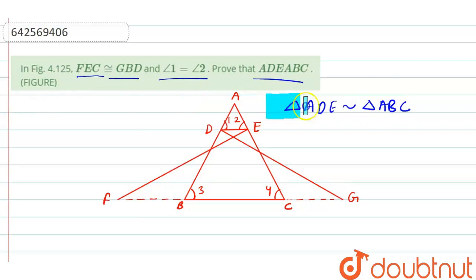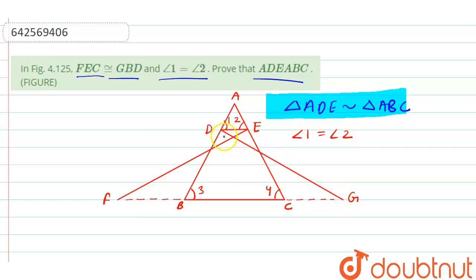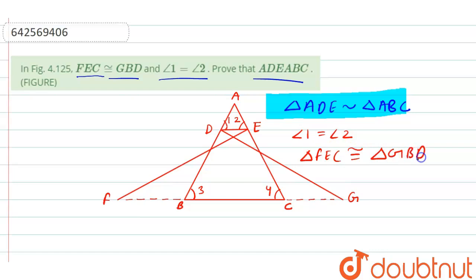Now, we are given angle 1 equals angle 2. Similarly, since triangle FEC is congruent to triangle ZBD, from this we can say that triangle FEC is congruent to triangle ZBD.